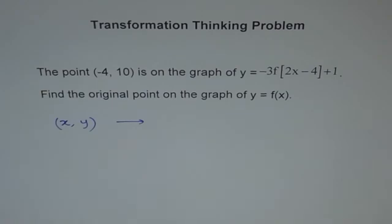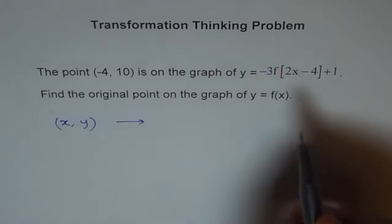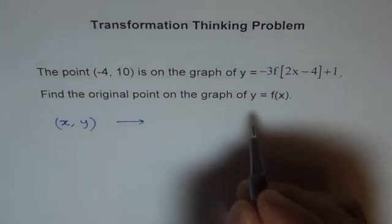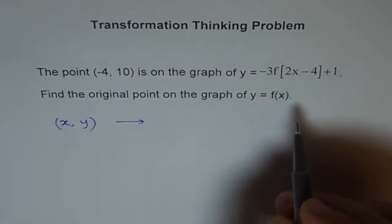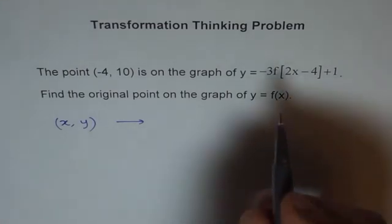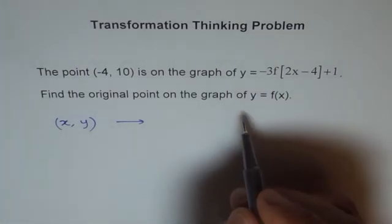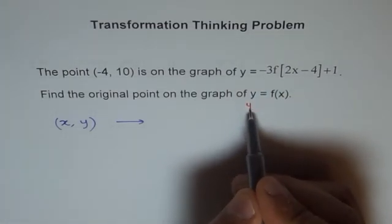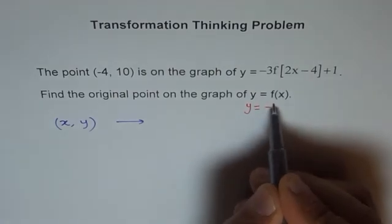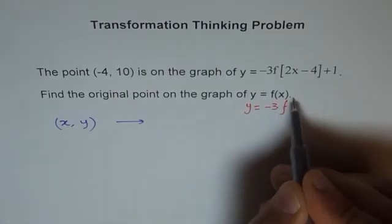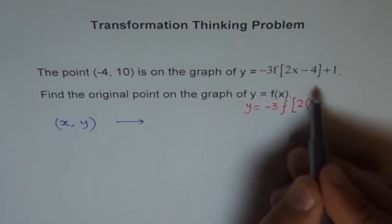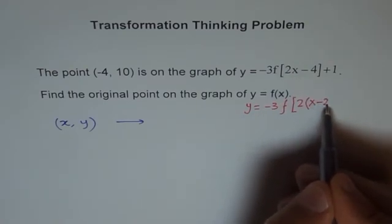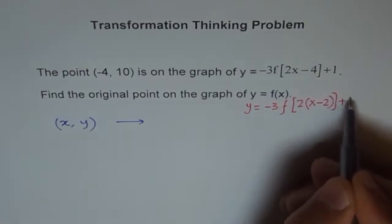Fine. So let me factor this function. I can write this function as y equals -3f(2(x - 2)) + 1. We factor out 2 from here, and then we are left with x minus 4 divided by 2 gives me 2, plus 1. Do you get it?